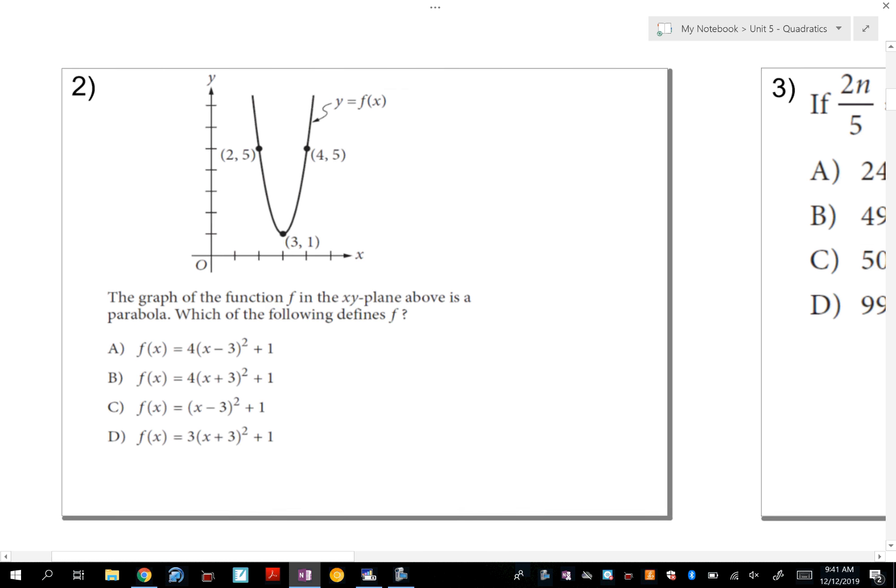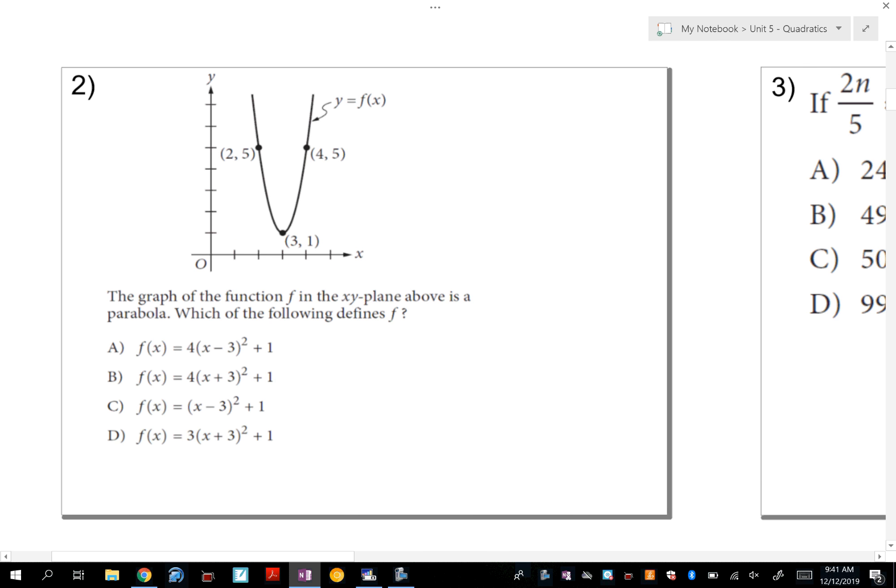Number 2 gives you the graph of this function, which is a parabola, so we know it's a quadratic, and it says which of the following is the function f. When I look at these answers, I see a, b, c, and d are all in vertex form. Well, if they're all in vertex form, let's go ahead and first look at the graph to find the vertex, and the vertex is (3, 1). Now when they're in vertex form, you must think opposite for your x value of your vertex. So when I look inside the parentheses in these answer choices, I'm actually looking for (x - 3)² squared. So I'm going to eliminate b and d because those do not say (x - 3)² in the parentheses.